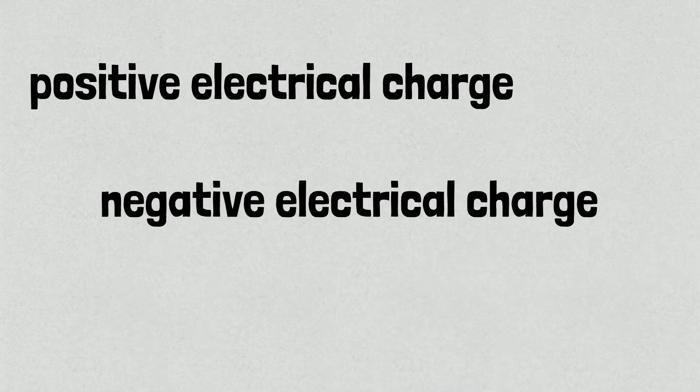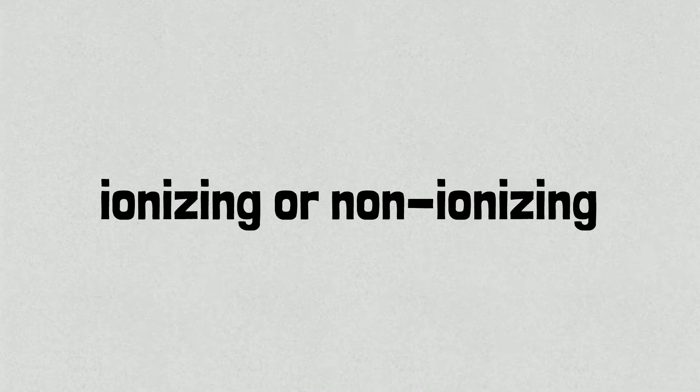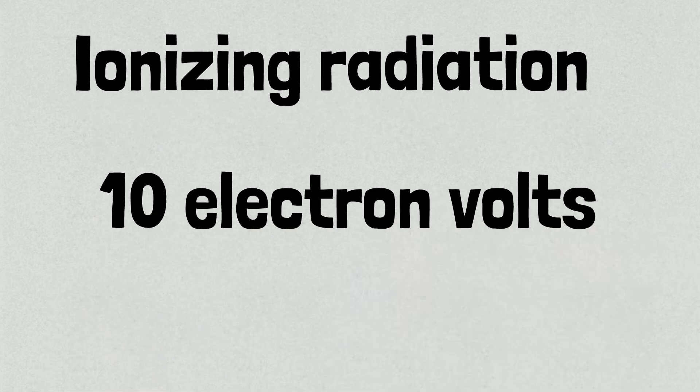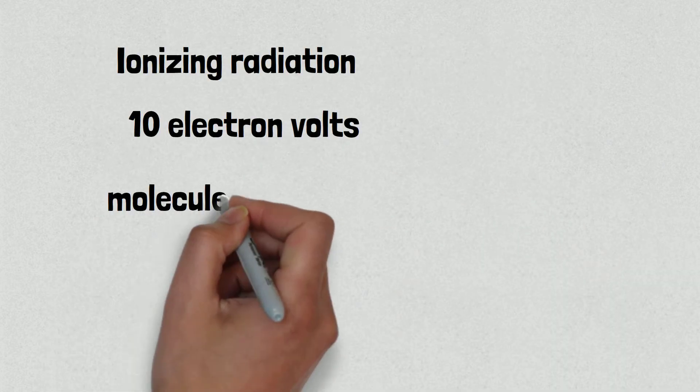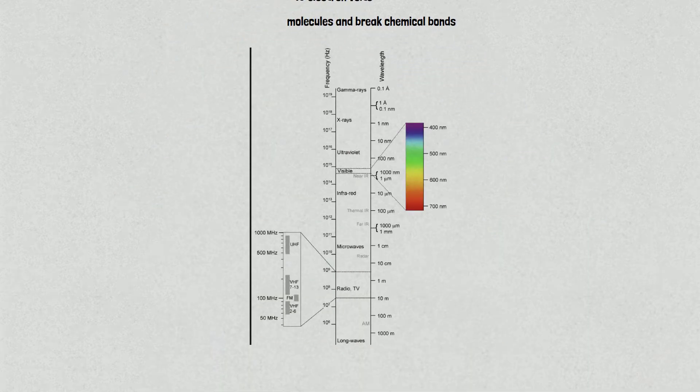Radiation is often categorized as either ionizing or non-ionizing depending on the energy of the radiated particles. Ionizing radiation carries more than 10 electron volts, which is enough to ionize atoms and molecules and break chemical bonds. As you can see in this chart, visible light and below are all types of non-ionizing radiation. Above visible light is ionizing radiation like ultraviolet, x-ray, and gamma rays.